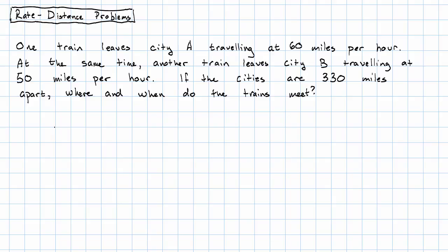In understanding a problem like this, a picture is very helpful. So here's City A, and here's City B. The distance between them is 330 miles. The train leaves City A, traveling at 60 miles per hour, and leaves City B, traveling at 50 miles per hour. Eventually, sometime later, somewhere in between the two cities, the trains will meet.